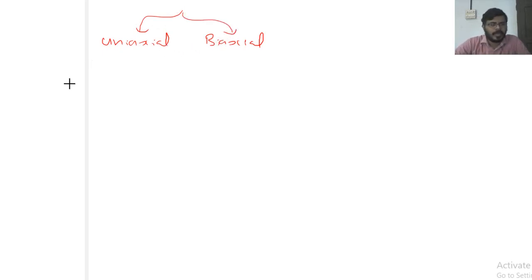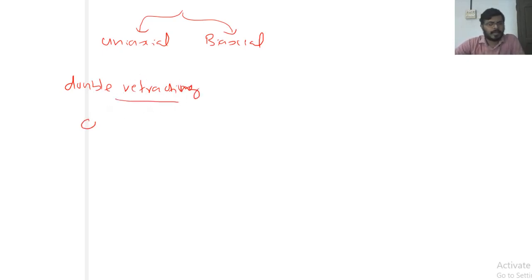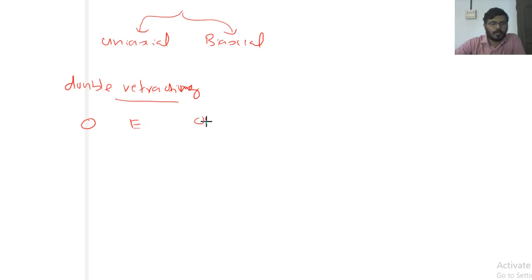If you consider a doubly refracting crystal, then the ordinary ray and extraordinary ray propagate with the same velocity along the optic axis. So along the optic axis, the ordinary ray and extraordinary ray propagate with the same velocity.